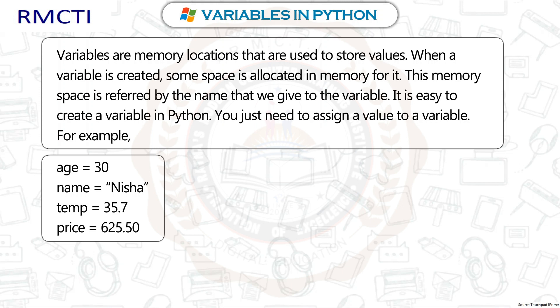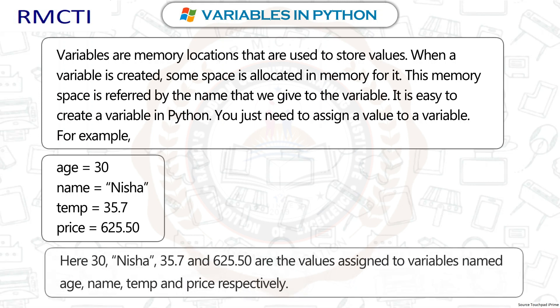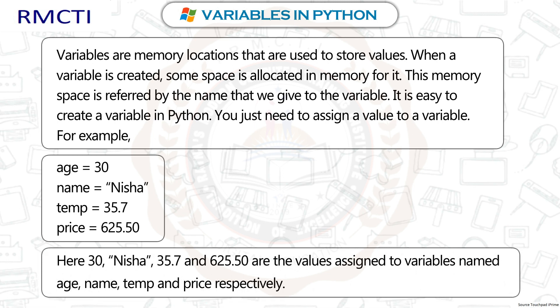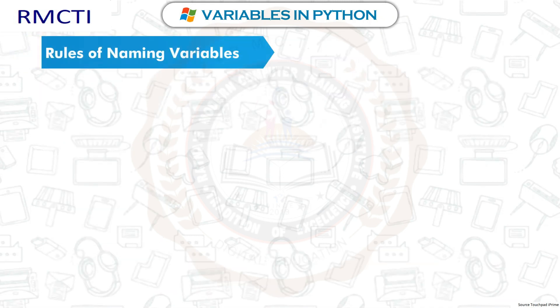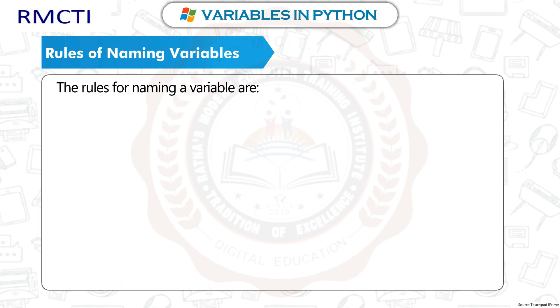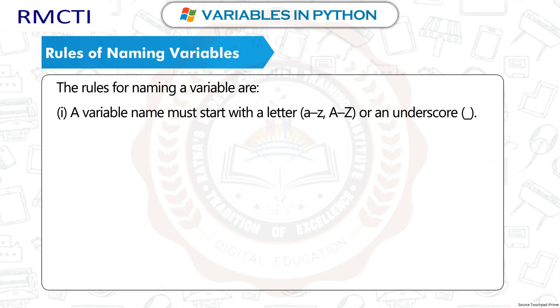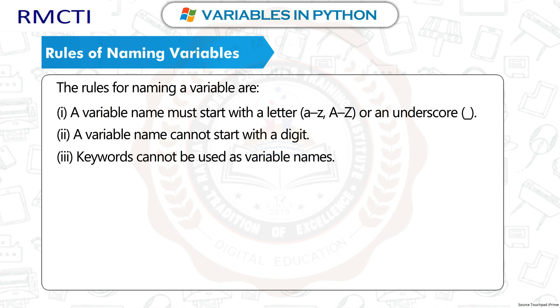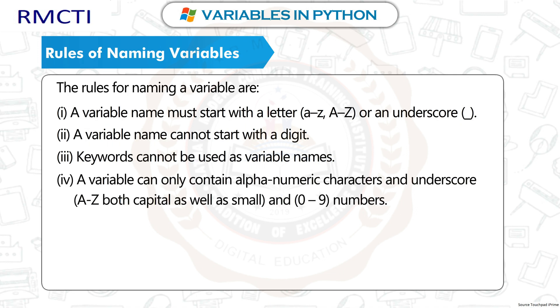price = 625.50. Here, 30, nisha, 35.7, and 625.50 are the values assigned to variables named age, name, temp, and price respectively. Rules of naming variables: (1) A variable name must start with a letter A–Z or an underscore. (2) A variable name cannot start with a digit. (3) Keywords cannot be used as variable names. (4) A variable can only contain alphanumeric characters.